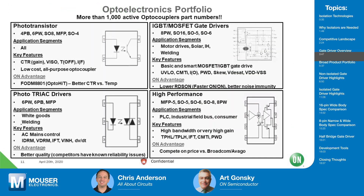In terms of products, ON Semi's gate driver portfolio starts with the OPTO, which has been around longer than I've been in the business. There are more than one thousand active optocoupler part numbers. It's a very simple four-pin part, very low cost, and available for about 98% of all applications. The workhorse of them all is the FODM8801, which has the best CTR versus temperature — the CTR stays very stable against temperature, like a rock.